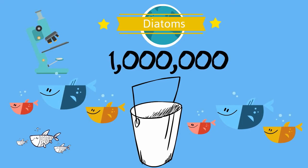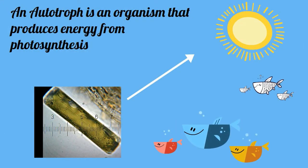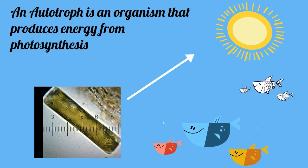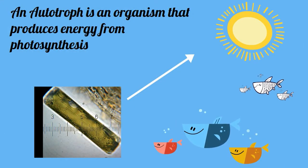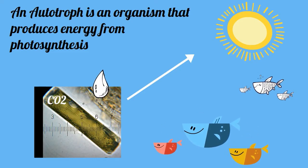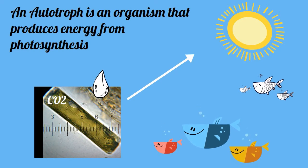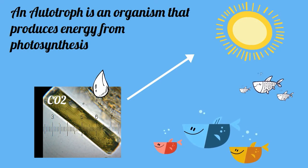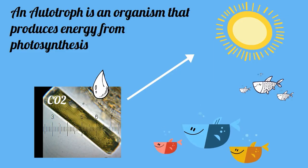Diatoms are autotrophs, which means they produce energy by photosynthesis. As a result, diatoms need sunlight, carbon dioxide, and water. They are found in the ocean, fresh water, and even moist topsoil.